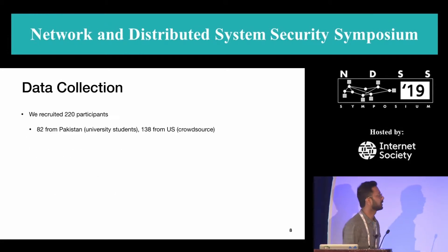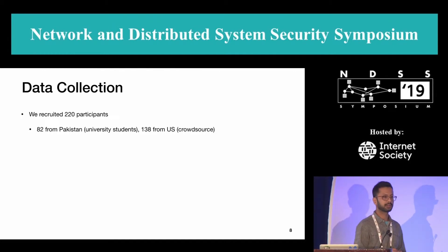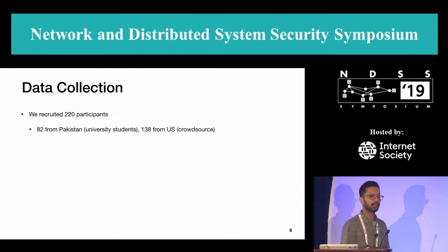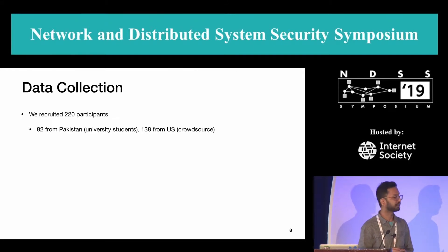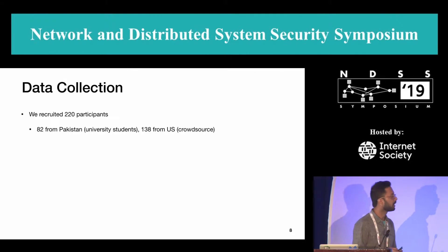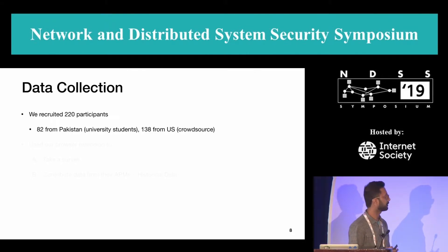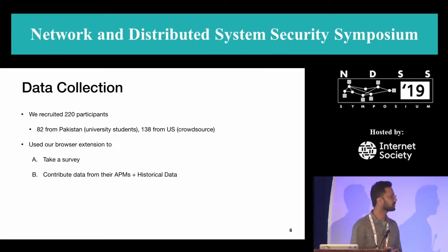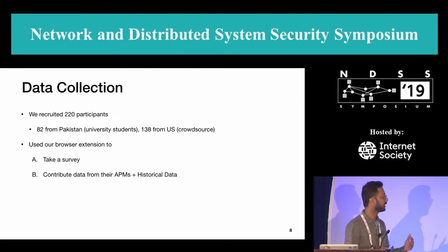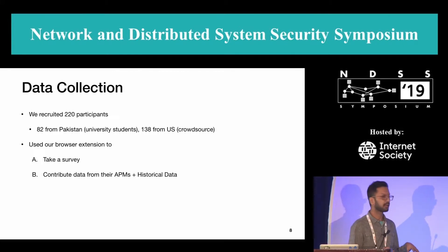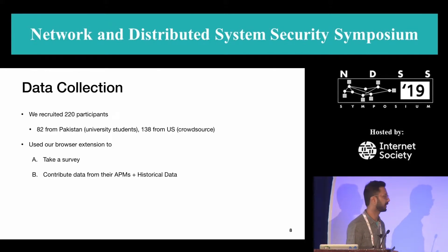For data collection, we recruited 220 participants: 82 from Pakistan, recruited in person from a university, and 138 recruited in the US using a crowdsourced platform called Prolific. All participants were given a browser extension through which they took a survey and contributed their data from the APMs, along with some historical data such as browsing history and search term history.